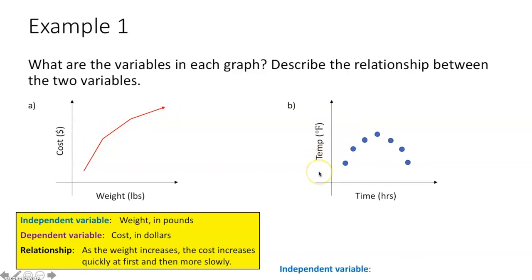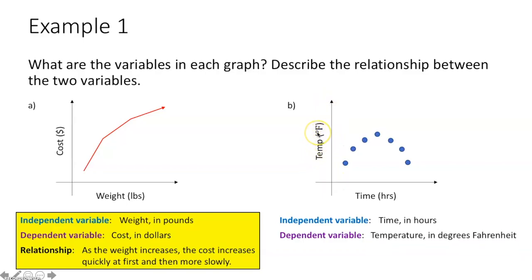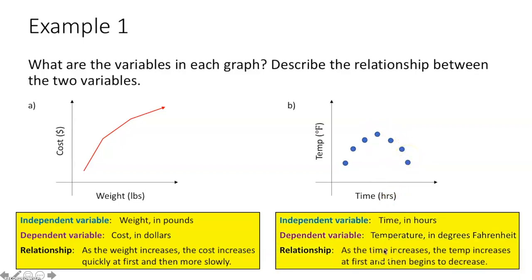For part B, our independent variable is along the x-axis: that's time in hours. Our dependent variable is along the y-axis: temperature in degrees Fahrenheit. As time increases, the temperature also increases until about halfway through. Then around halfway, the temperature starts to decrease. So as time increases, the temperature increases at first and then begins to decrease.